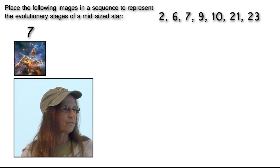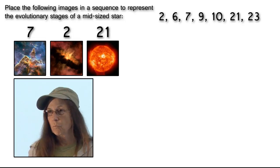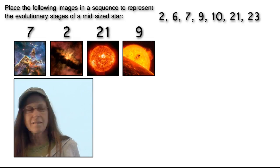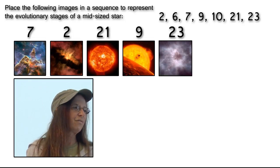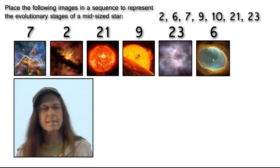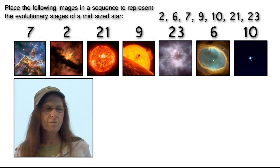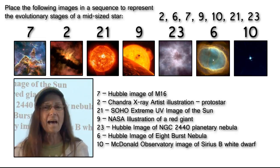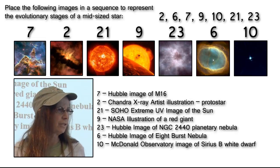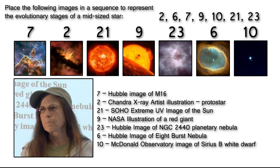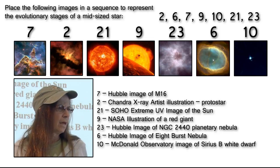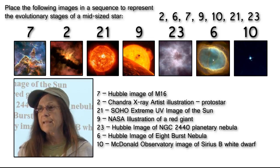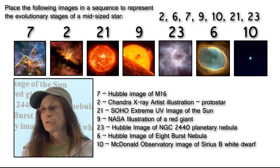So, I have 7, 2, 21, 9, 23, and 6, and 10. Okay, so what have we here? Well, we have a star formation region, that's a Hubble image of M16, the Eagle Nebula. Then we have a Chandra X-ray artist illustration of a protostar, and yes, there are actual images of protostars, depending upon your audience, how basic you want to begin.